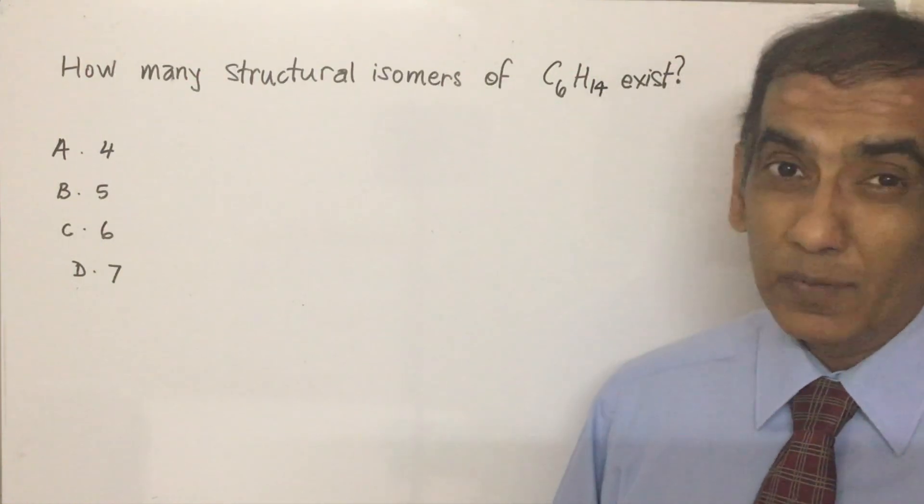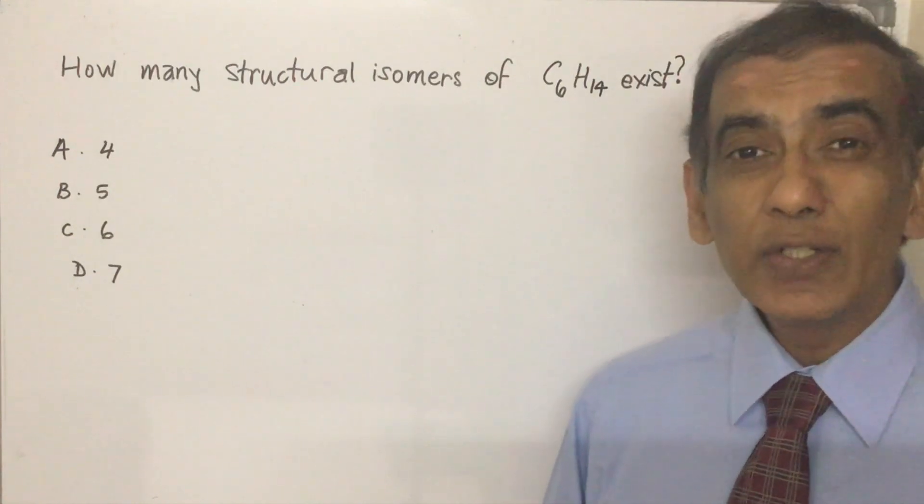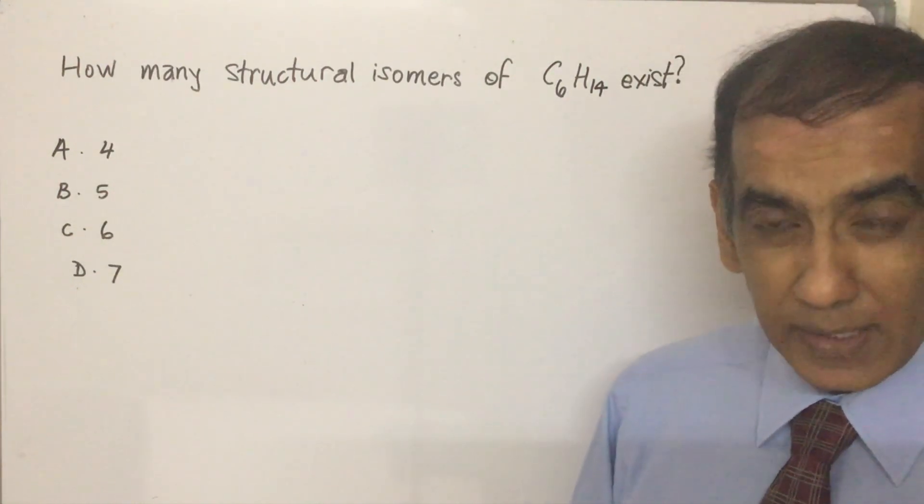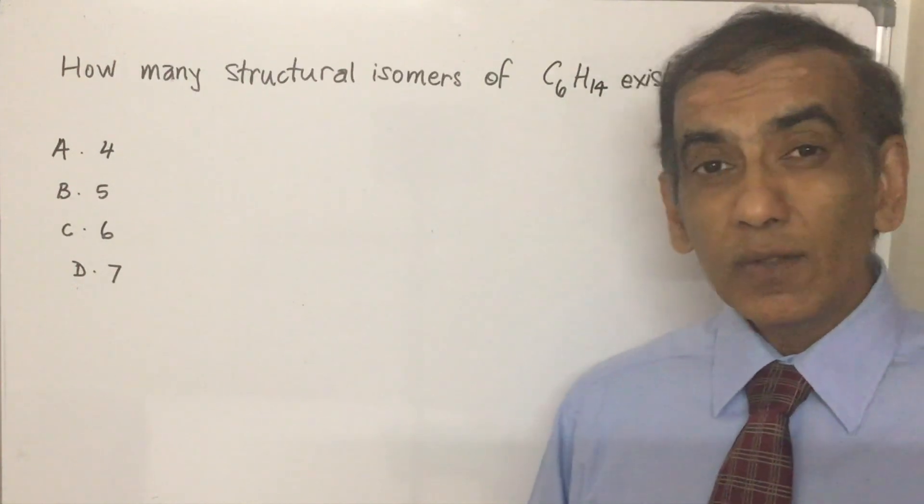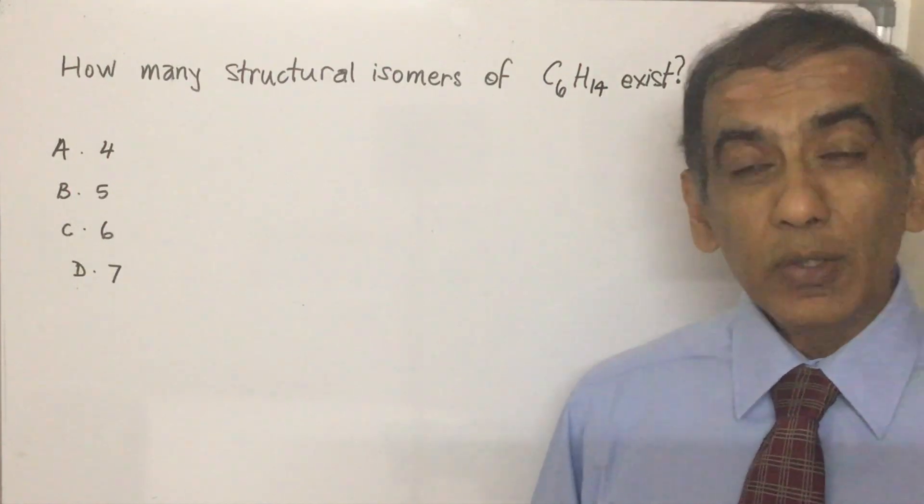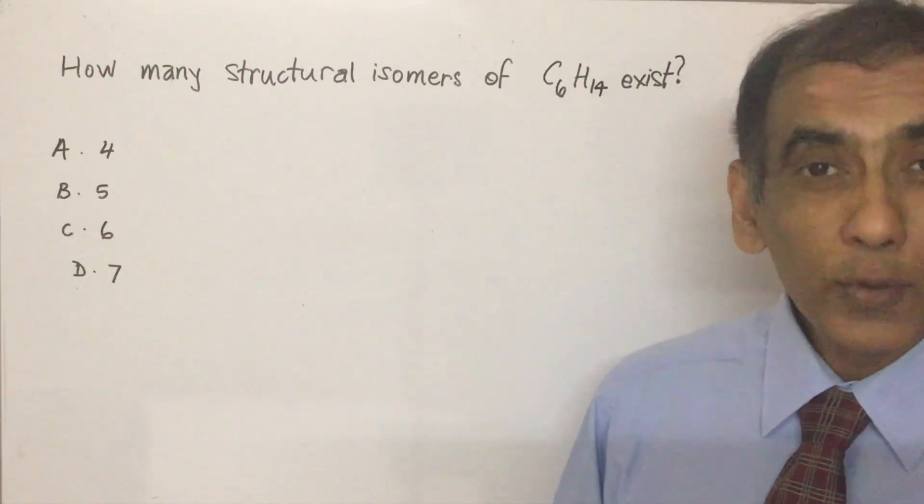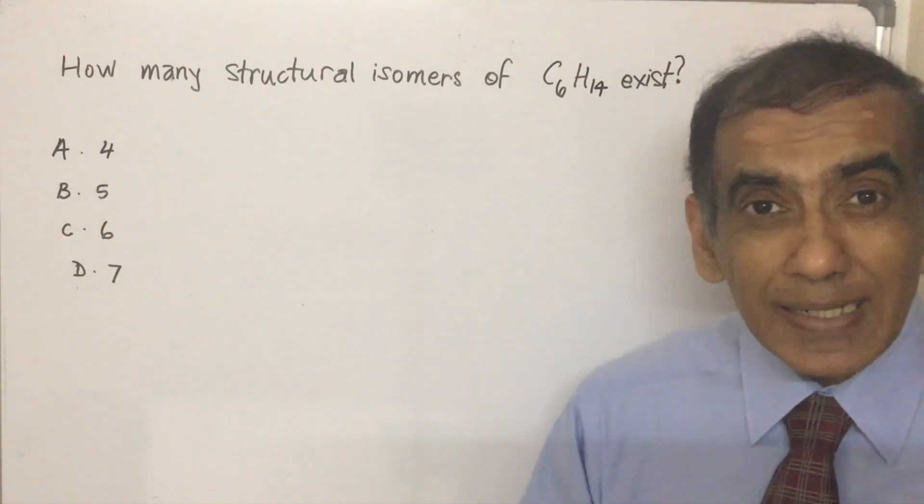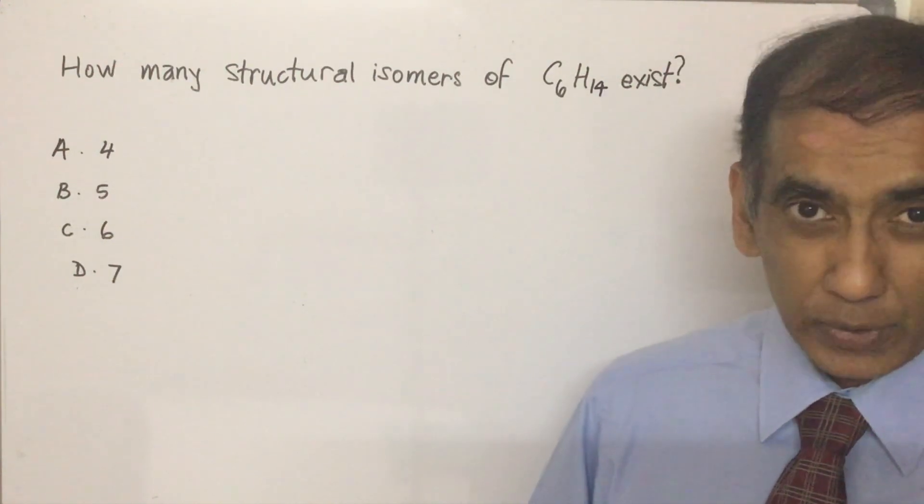Bear in mind though that you are given an average of 90 seconds to solve a question in the IB exam. SL students, you've got 45 minutes to do 30 multiple choice questions. HL students, you've got an hour to do 40 multiple choice questions.